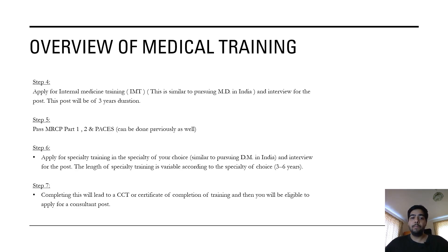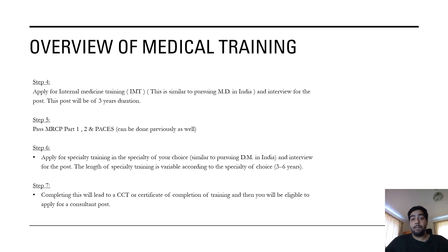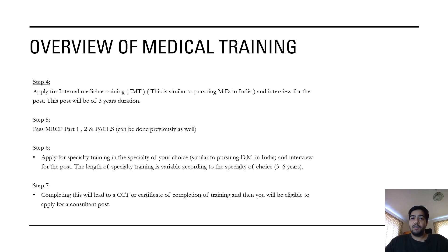The next step is to apply for internal medicine training through Oriel — this is similar to pursuing an MD in India. There will be an interview for this post, and after you're successful you'll get into an IMT post of two to three years duration. The next step is to pass all parts of MRCP, which includes Part 1, Part 2, and PACES — these can be done earlier as well. After completing IMT and passing MRCP, you apply for specialty training through an interview, similar to pursuing a DM in India. The length of specialty training is variable, ranging from three to six years, and leads to CCT — Certification of Completion of Training — making you eligible to apply for a consultant post.